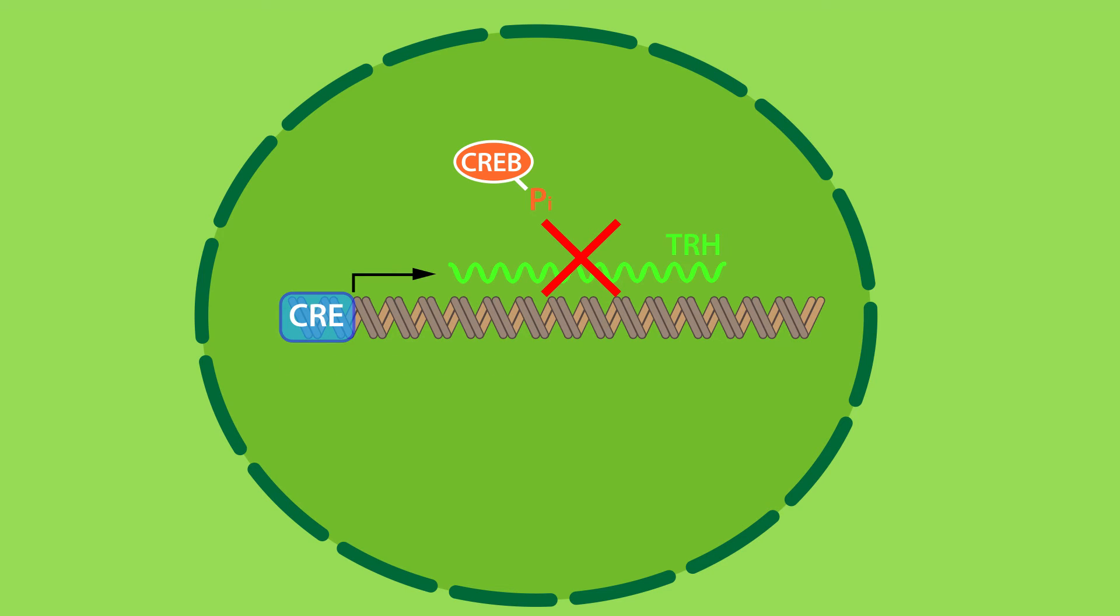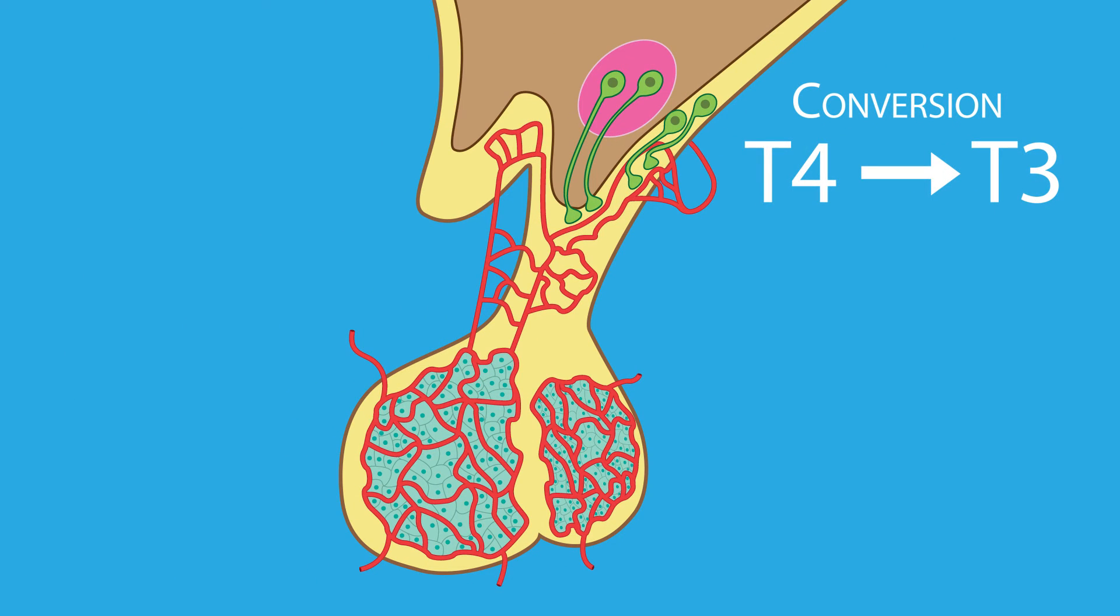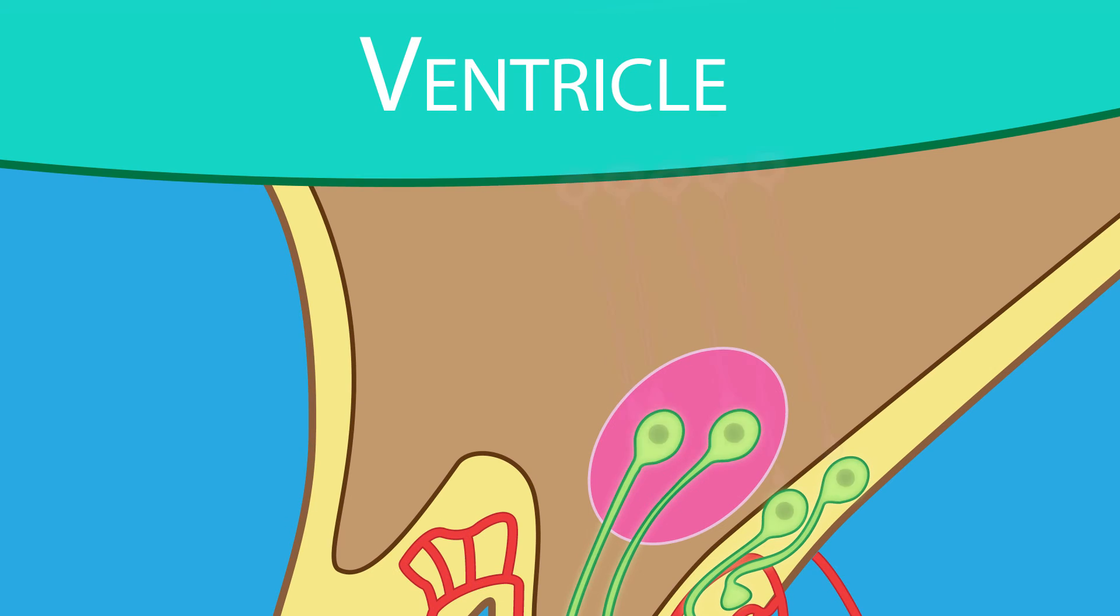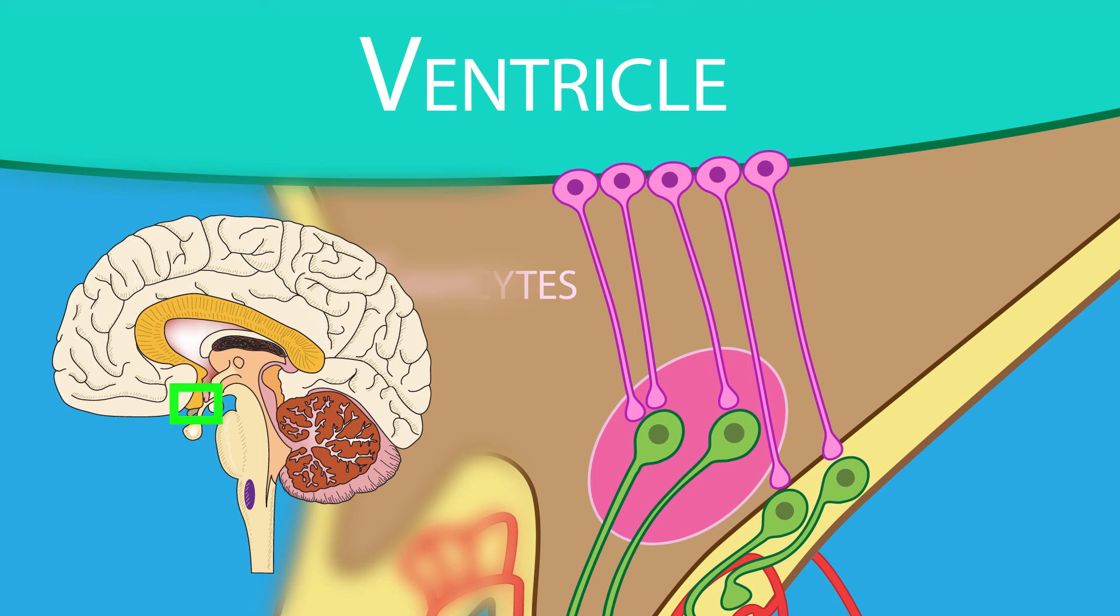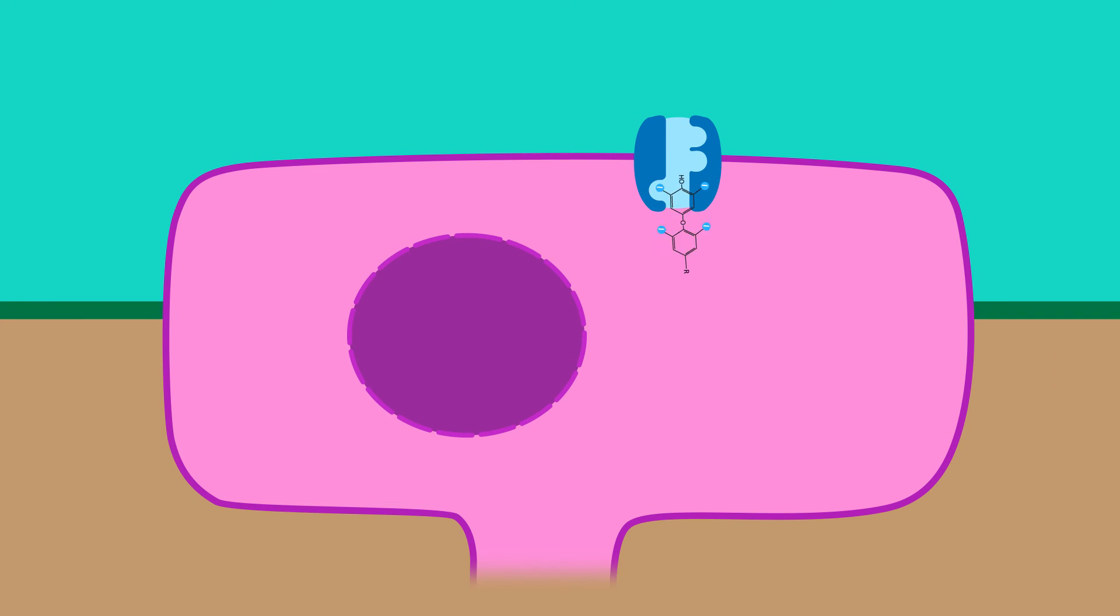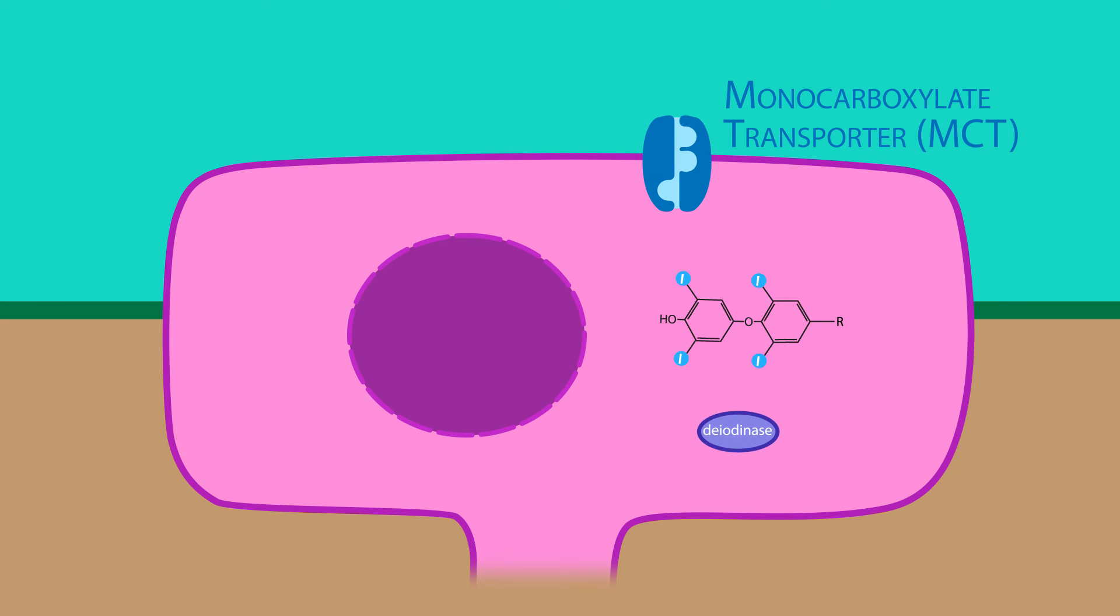This is how T3 inhibits the synthesis of TRH. Plasma T4 is first converted into T3. But instead of this happening in TRH-synthesizing cells, it happens in neighboring tannocytes, which are specialized cells found in the ventricle of the brain. Tannocytes take up T4 by the monocarboxylate transporter, then type 2 diiodinase converts T4 into T3.